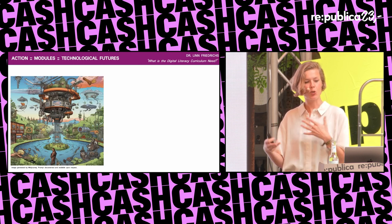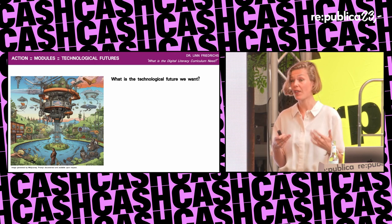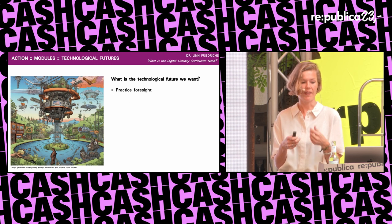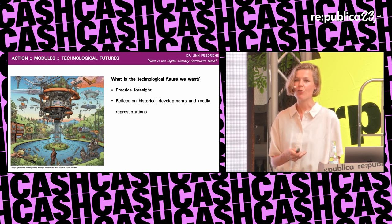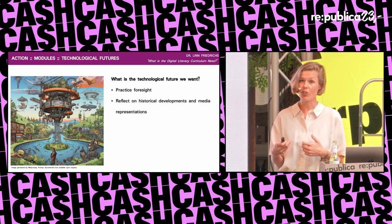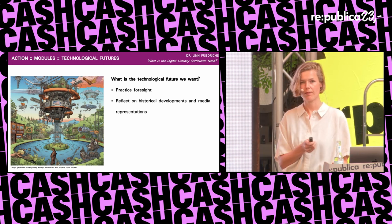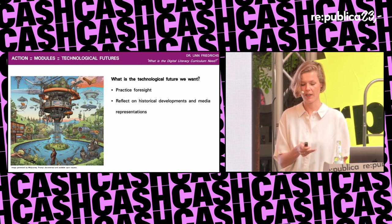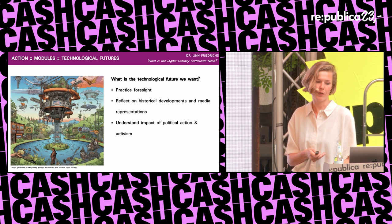Module ten: a curriculum needs a concluding module on technological futures. Students should learn about methods that help them practice foresight. Can they think of a time when a prediction about technology came true? What are the stories they're reading, and how does that shape their view of technology? Which political and activist actions have influenced tech development? This should be a place for self-reflection so that students can think about what they want technology to be like — for themselves and for future generations.